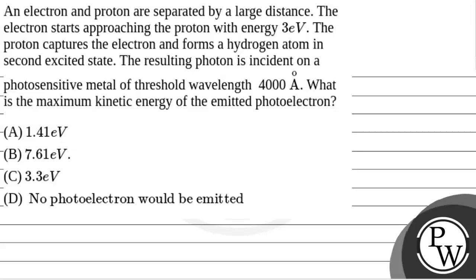Hello. Let's read the question. The question says that an electron and proton are separated by a large distance. The electron starts approaching the proton with energy 3 electron volt. The proton captures the electron and forms a hydrogen atom in second excited state. The resulting photon is incident on a photosensitive metal of threshold wavelength 4000 angstrom. What is the maximum kinetic energy of the emitted photoelectron?